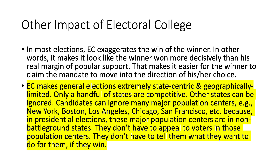Most importantly, the electoral college makes general elections extremely state-centric and geographically limited because only a handful of states are competitive — other states can be ignored. Candidates can ignore major population centers such as New York, Boston, Los Angeles, Chicago, and San Francisco because in presidential elections these centers are in non-battleground, non-purple states where election results are pretty much predetermined. If you live in New York City, New York will choose the Democrat; if you're in Boston, Massachusetts will go Democrat; Los Angeles or San Francisco, California will pick the Democrat — as it has in every election since 1992.